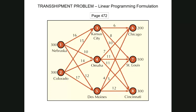Now we have a new problem from your textbook on page 472, so you can follow along there. What we're doing is shipping potatoes from Nebraska and from Colorado to either Chicago, St. Louis, or Cincinnati. But in the middle, at Kansas City, Omaha, and Des Moines, potatoes come in, are offloaded and reloaded onto trucks, and shipped onward to either Chicago, St. Louis, or Cincinnati.